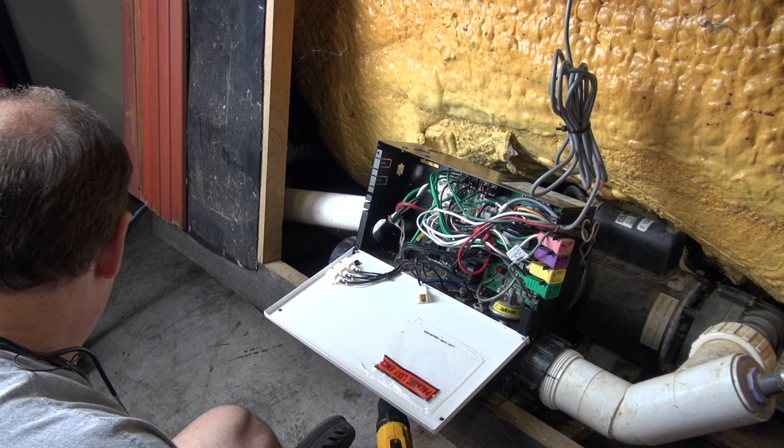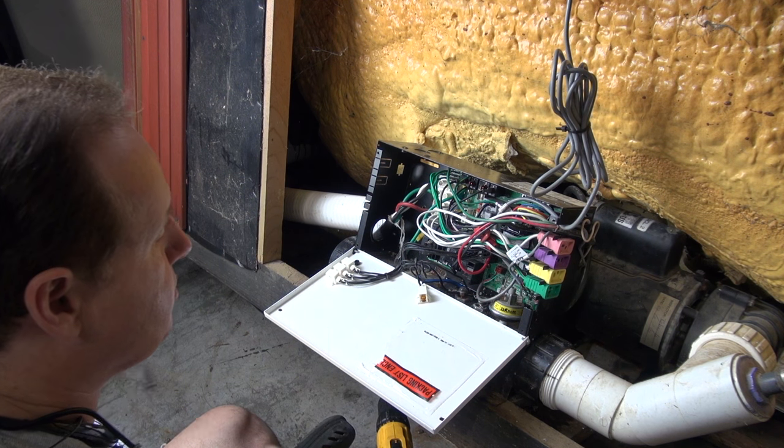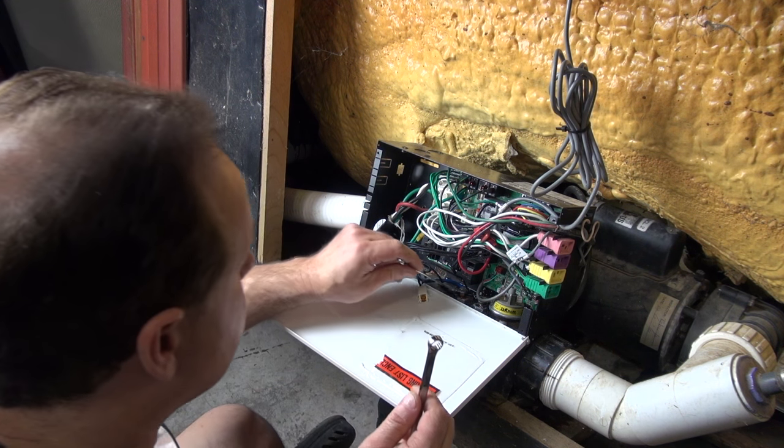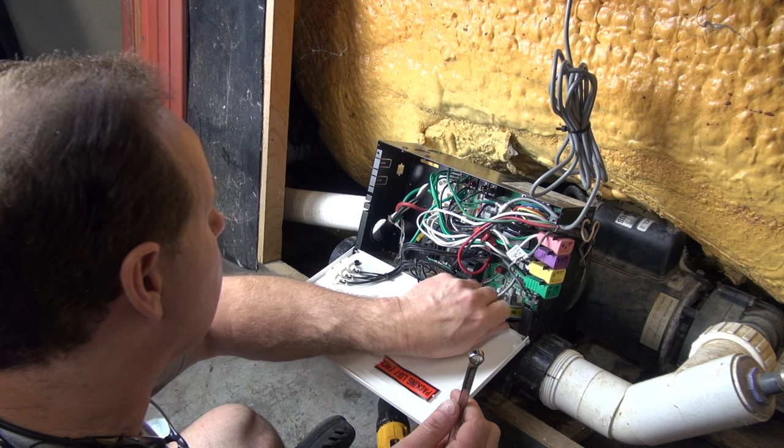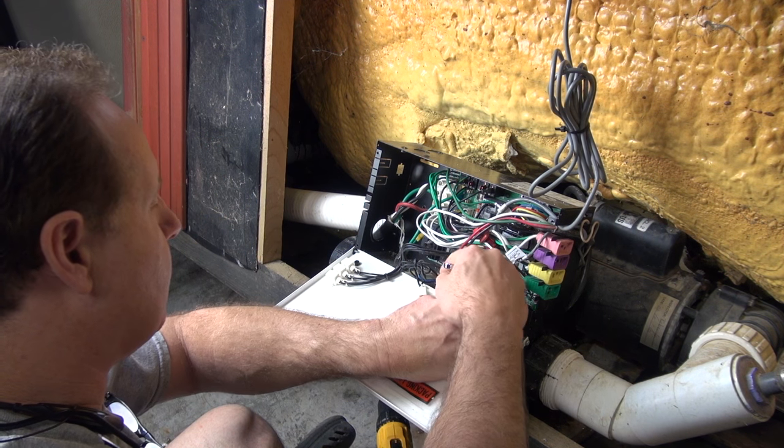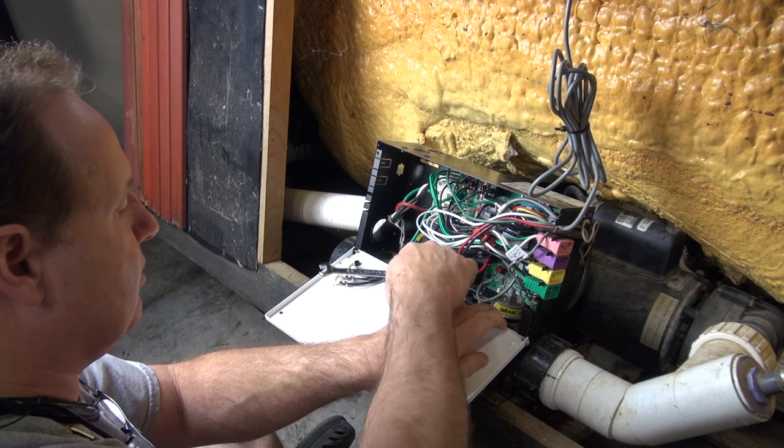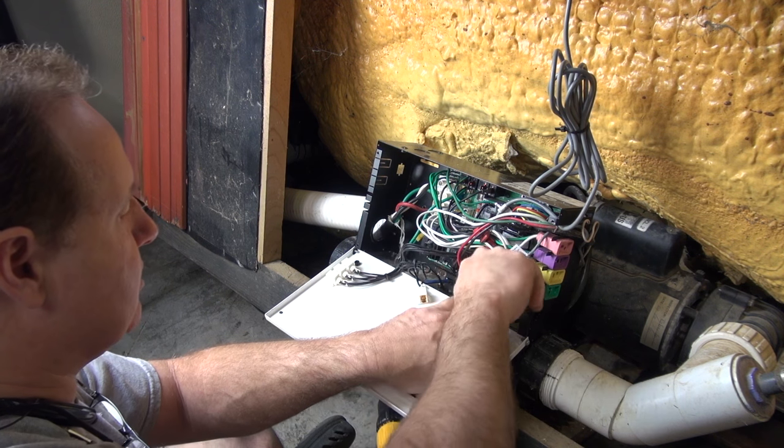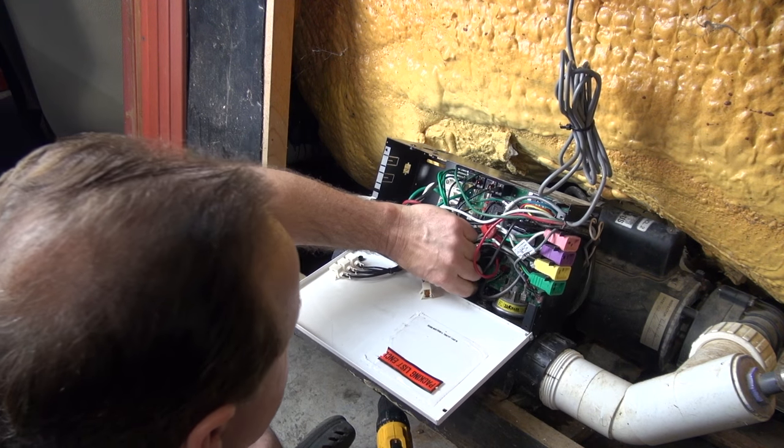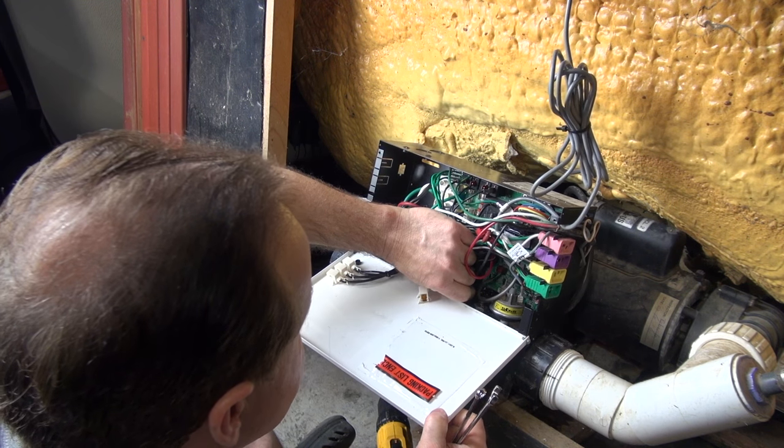Now, I'm going to loosen these screws, which are the, or loosen these bolts I should say, on the heater. And these have a light right here. That's what the extra set of wires are. So it's a heat indicator. It tells you when the heater is actually on.